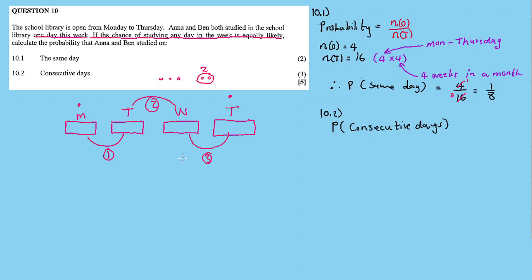So it's going to be equal to 3, but times 2, because there are two consecutive days, divided by 16.